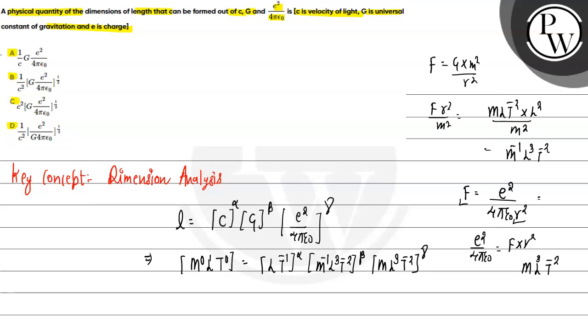Now we can write: Mass equals -β plus γ. Length equals α plus 3β plus 3γ. Time equals -α minus 2β minus 2γ. That's it.